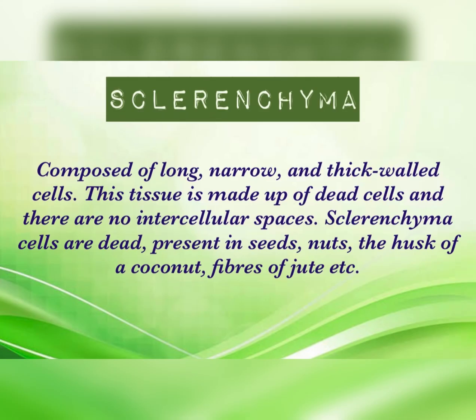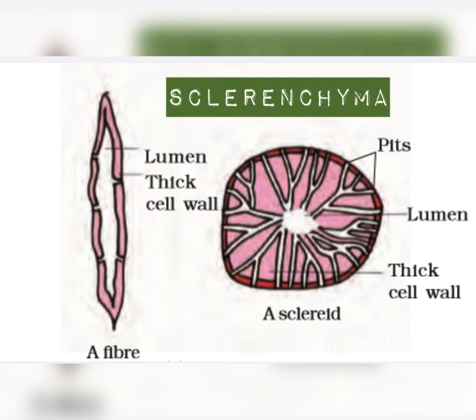Sclerenchyma cells are dead cells with thick walls and deposition of lignin. There is no intercellular space because of lignin. They are found in seeds, nuts, the husk of coconut, and the fibers of jute. The fibers and sclereids of sclerenchyma provide hardness to the regions in which they are found.